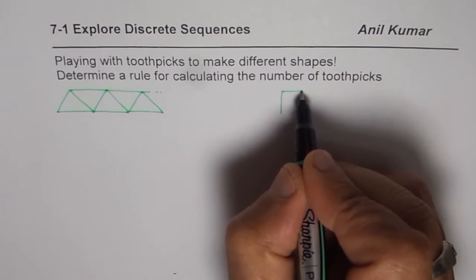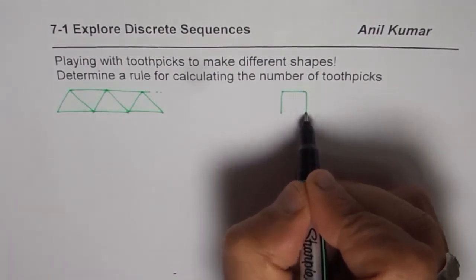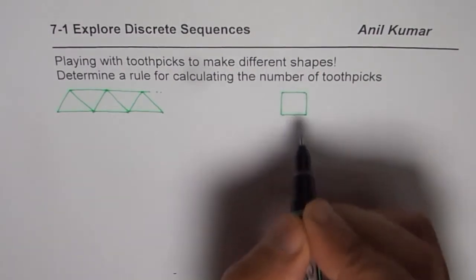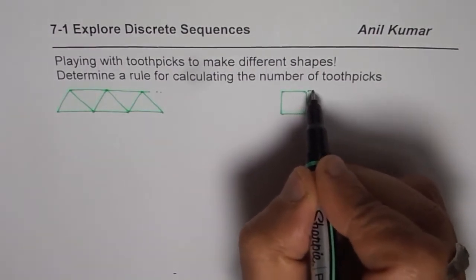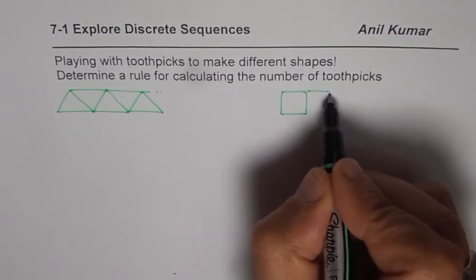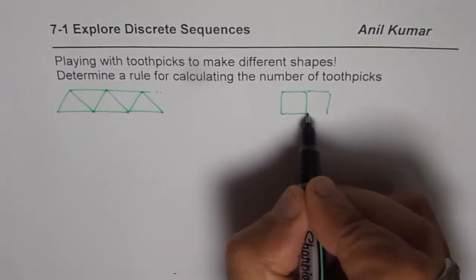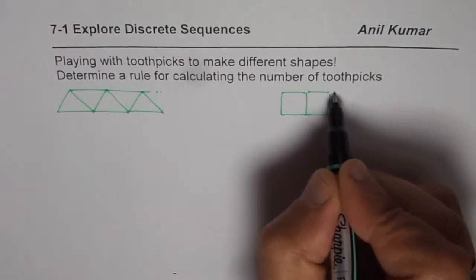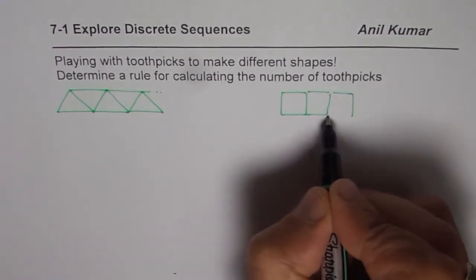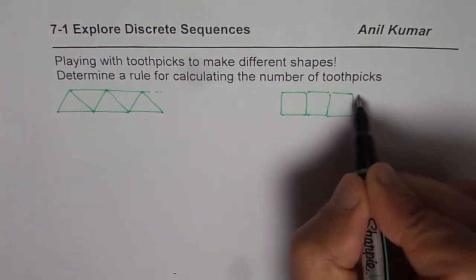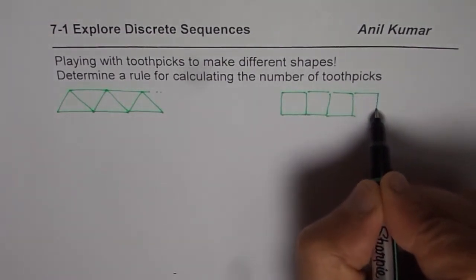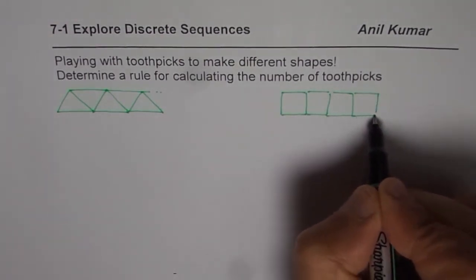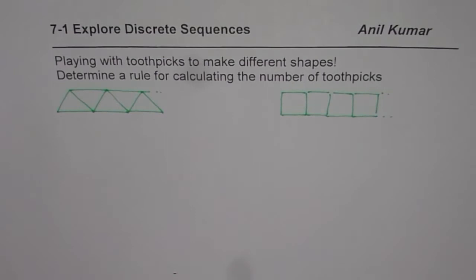Similarly, we can make a different kind of pattern. This time let us make squares. You need four toothpicks to make a square and then you can add more to make more squares, and you can repeat this pattern.